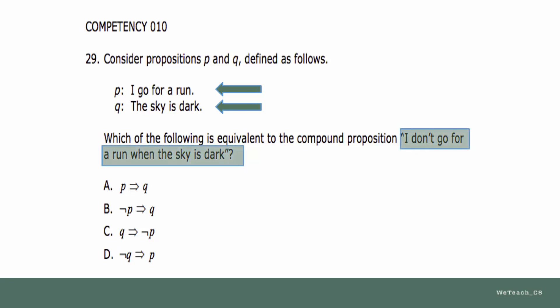The sentence that combines the two ideas is an implication. Choice A is the standard form for an implication, which is read, If P, then Q.